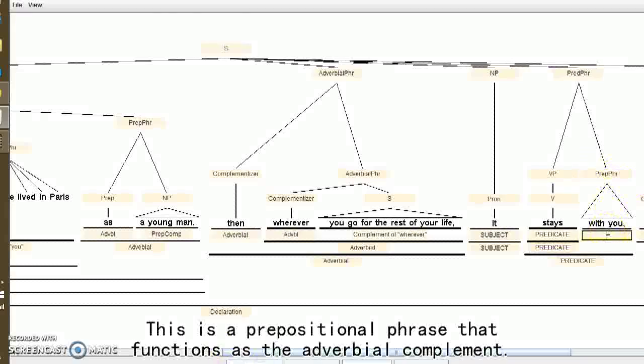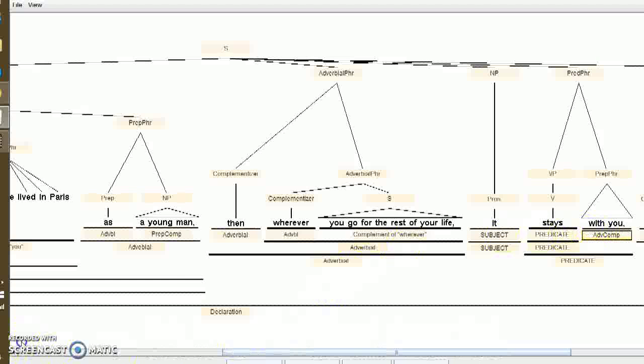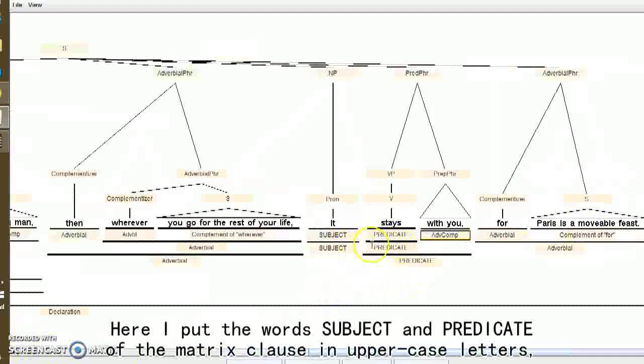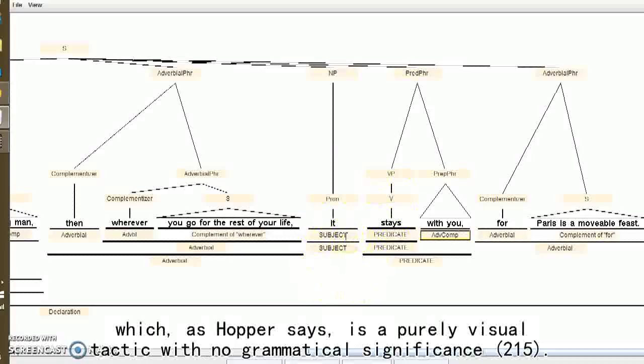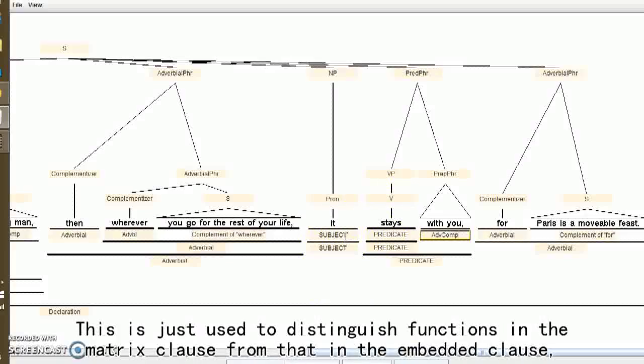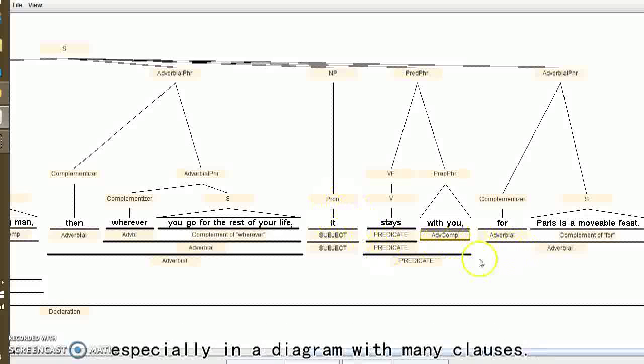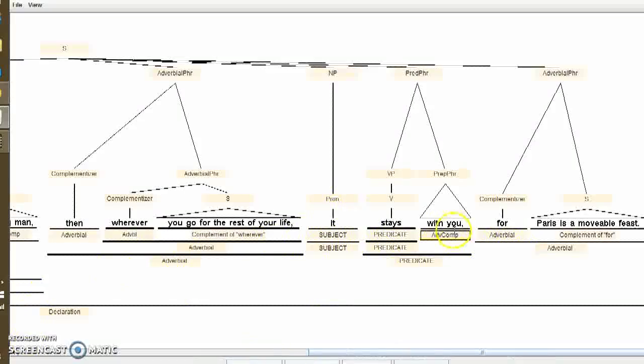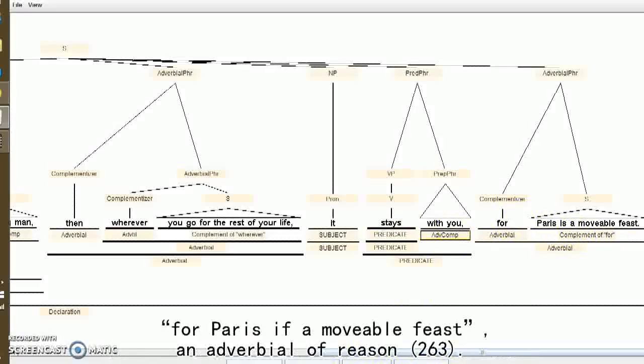This is a prepositional phrase that functions as the verbal complement. Here I put the words subject and predicate of matrix clause in other class letters, which as Hopper said, it is a purely visual tactic with no grammatical significance. It is just used to distinguish functions in a matrix clause from that in the embedded clause, especially in a diagram with multiple clauses.